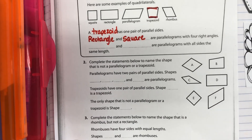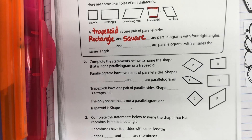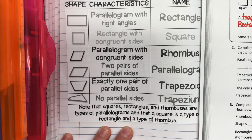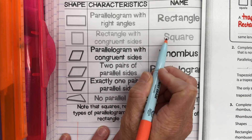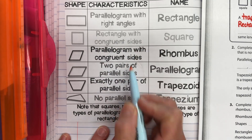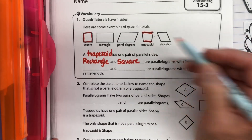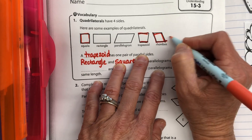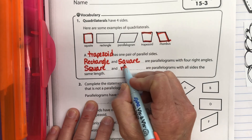Blank and blank are parallelograms with all sides the same length — that means congruent sides. A square has congruent sides and a rhombus has congruent sides. All four sides of the rhombus are the same length, just like a square that's been pushed sideways. So a square and a rhombus are parallelograms with all sides the same length.